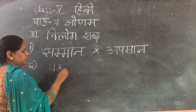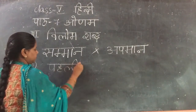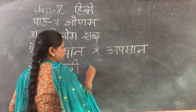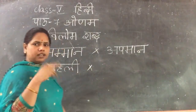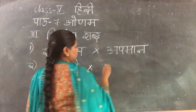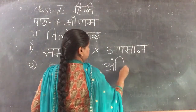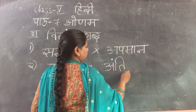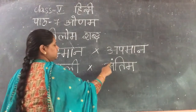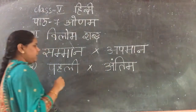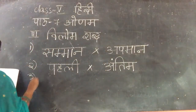Pehla means First. And the opposite of first is last — Antim. Pehla means First, Antim means Last. Third one.